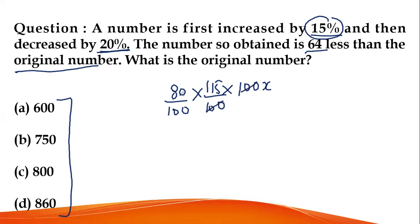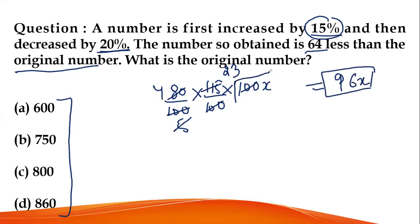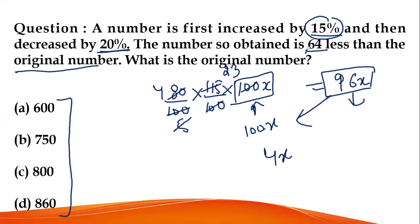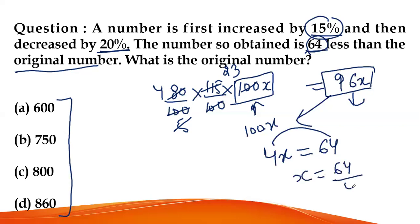100 cancels with 100. After cancellations — 5 and 23 cancel — giving 23 × 4 = 96X. Wait, let me check — original number was 100X. After all calculations the number obtained is 96X. Comparing to original 100X, the difference is 4X. And actually it is 64 less. So 4X = 64, giving X = 64 ÷ 4 = 16.